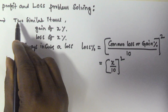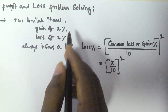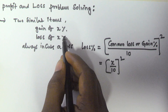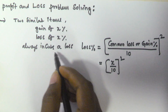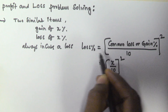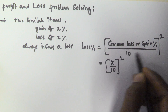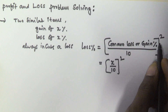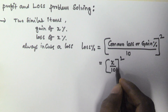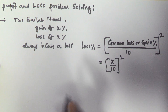Whenever two similar items are sold — one at a gain of x percentage and another at a loss of x percentage — the seller always gets a loss, and that loss percentage is given by (common loss or gain percentage / 10)². In our case, the common loss or gain is x, so it becomes (x/10)². How did we get this?